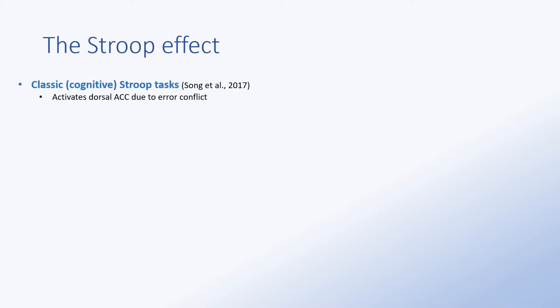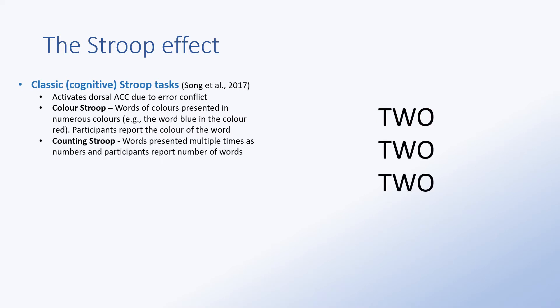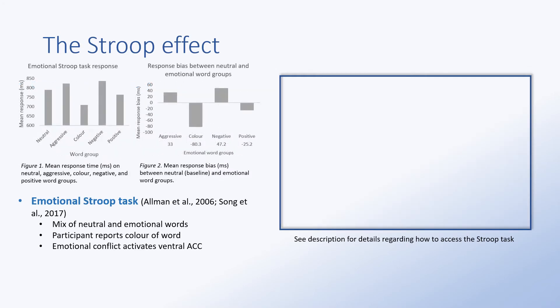Cognition and emotion regulation can be demonstrated by variations of the Stroop effect. Classically, the Stroop task examines conflict between an incongruent color and word, or the number of words as in the counting Stroop task. In a variation named the emotional Stroop task, participants identify word colors amongst a set of neutral and emotional words. The key difference is the conflict between the emotional relevance of the word and the individual's processing, which can cause a delay due to emotional processing performed by the ventral ACC.